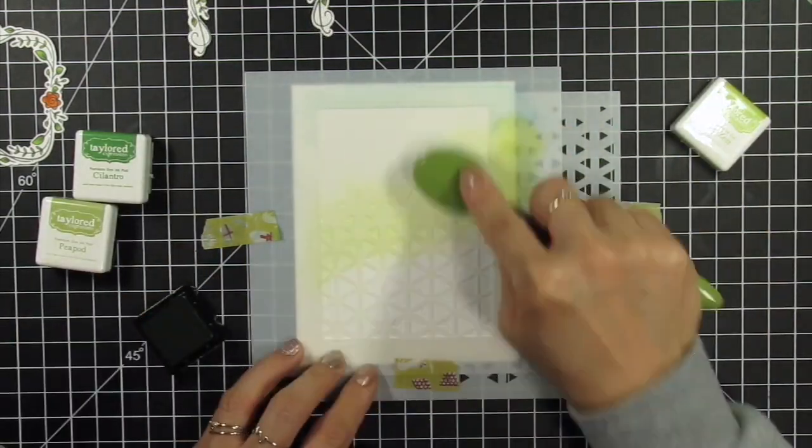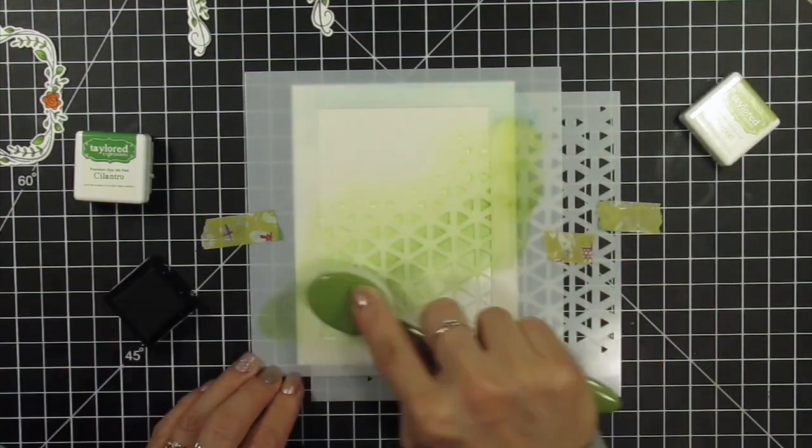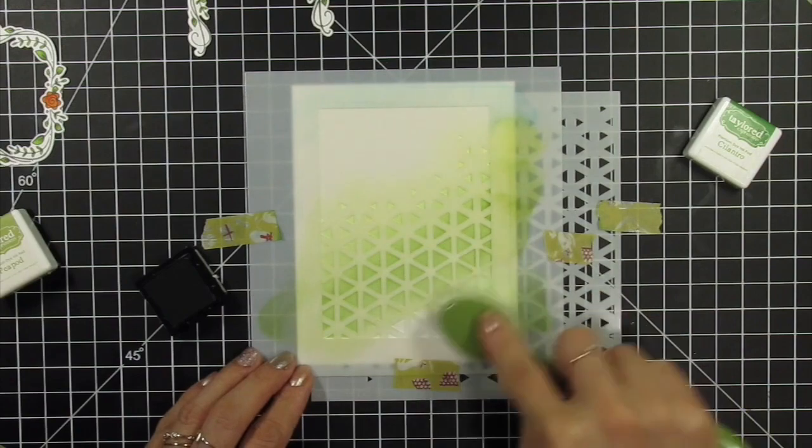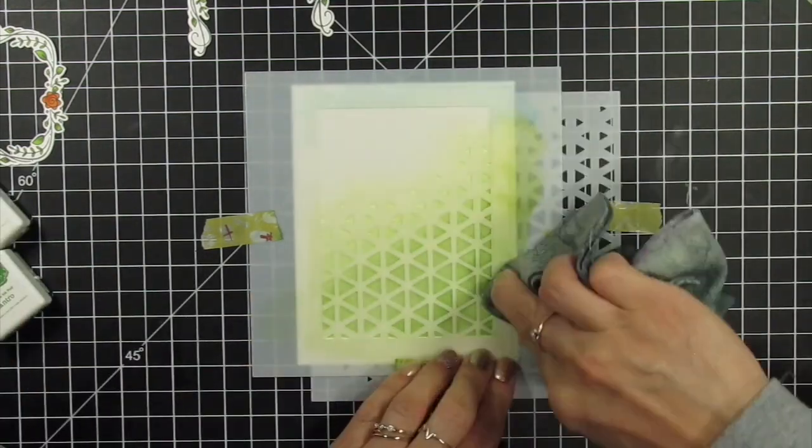For this stencil, I'm using the same three greens as on the previous stencil, and I'm going to use the colors in reverse order so the top of the card will have the lightest green, Lime Zest, and I'll create a diagonal ombre with Pea Pod and Cilantro.